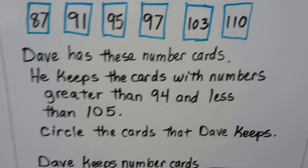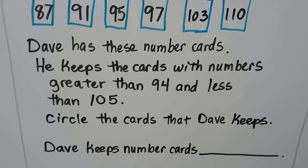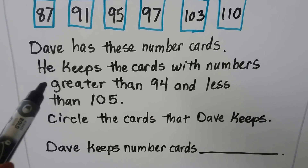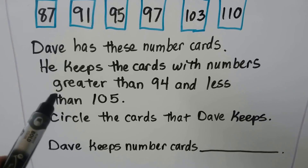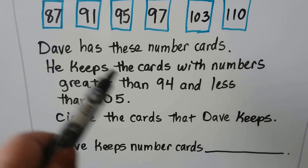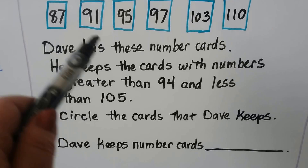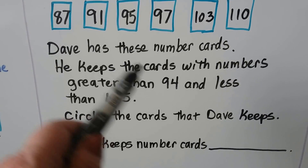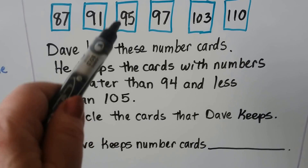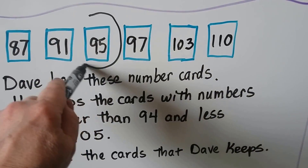We crossed off the ones he gave away to see what was left. Now let's try this one. Dave has these number cards. He keeps the cards with numbers greater than 94 and less than 105, so we need to circle the cards he keeps. Is 80-something greater than 94? It has eight tens and 94 has nine tens — not going to be circled. Is 91 greater than 94? They both have nine tens, but 91 has one one and 94 has four ones — not greater. How about 95? They both have nine tens, but 95 has five ones and 94 has four ones — yes, 95 is greater than 94, so we circle it.